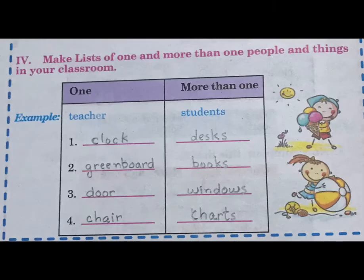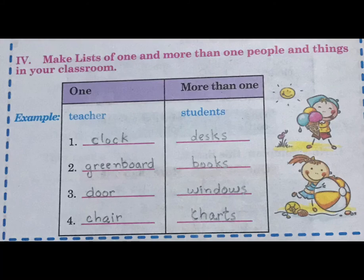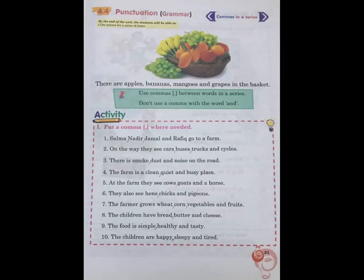Activity number 4: Make a list of one and more than one pupils and things in your classroom. For example: one teacher, more than one students. One clock, green board, door, chair. More than one: desks, books, windows, charts. Now look at page number 31.